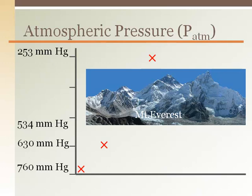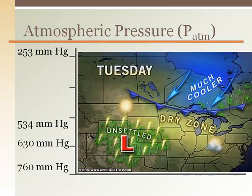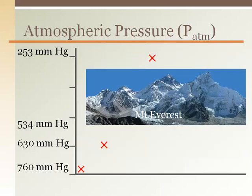Atmospheric pressure can also fluctuate depending on the weather. When forecasters refer to a high pressure front or a low pressure front, they are referring to atmospheric pressure. This also affects the amount of oxygen available to breathe in. On Mount Everest, great weather or the presence of a high pressure front not only means good climbing, but it also means just a little more oxygen available to breathe.